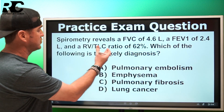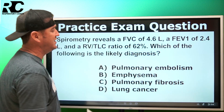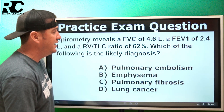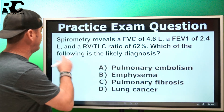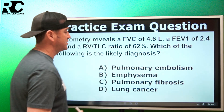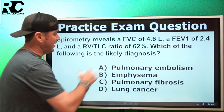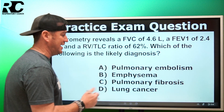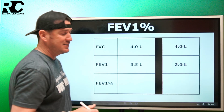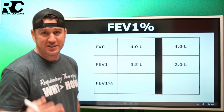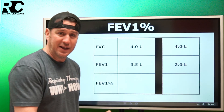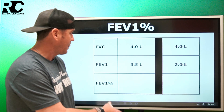So here it goes. Spirometry reveals an FVC of 4.6 liters, an FEV1 of 2.4 liters, and an RV to TLC ratio of 62%. Which of the following is a likely diagnosis? We're going to come back to this in just a second — I want to show you how you answer this question.